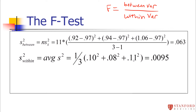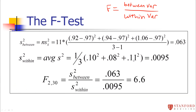The F statistic is just the ratio of those two variances: 0.063 divided by 0.0095 gives an F statistic of 6.6. With numerator degrees of freedom of 2 and denominator degrees of freedom of 30, the corresponding p-value comes out to less than 0.001 — highly statistically significant. Under the null hypothesis, F should be close to 1, so 6.6 definitely exceeds that. All of this will be calculated for you by the computer.